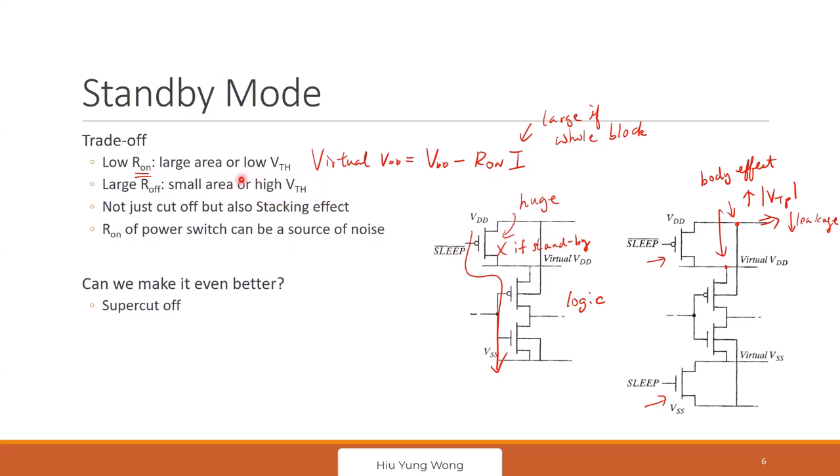So, you need high VTH and small area. So, this is a trade-off between the R on and R off. Ideally, you want to make this zero, but it's impossible. And also, it can become a source of noise. Any question about this one?